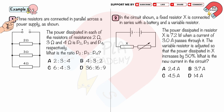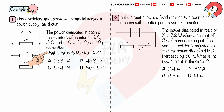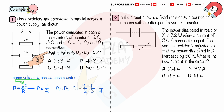Three resistors are connected in parallel across a power supply, as shown. The power dissipated in each of the resistors of resistance 2 ohms, 3 ohms, and 4 ohms is P2, P3, and P4 respectively. What is the ratio P2 to P3 to P4? From P equals V squared over R, the voltage across each resistor is the same because they are in parallel, so power is inversely proportional to resistance. This gives P2 to P3 to P4 equals 1/2 to 1/3 to 1/4. Multiplying each term by 12, we get the ratio 6 to 4 to 3.